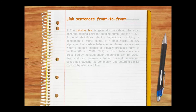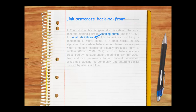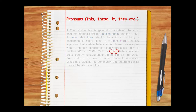When you link sentences front-to-front, you take ideas from the fronts of sentences and include related ideas in the front of subsequent sentences. Explicit cohesive markers like connectives or transition words can also make writing feel more cohesive, as can pronouns — words like this, these, it, they, and so on. The best writers use a variety of front-to-front links, back-to-front links, and explicit cohesive markers.